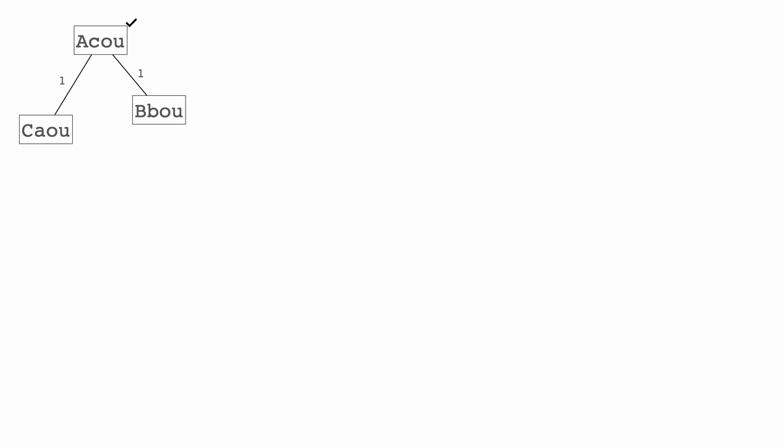We see we can make move one back to A C O U — that's already shown. We can make move one to B B O U. We can also make move four, taking us to C A I U. And finally we can make move three, reaching C B O D. That's all the possible moves from C A O U, so we put a check mark here and continue.